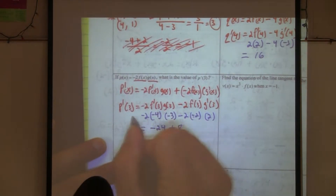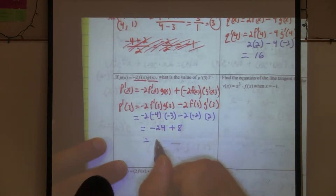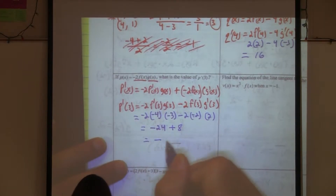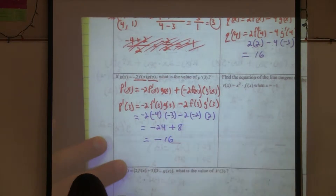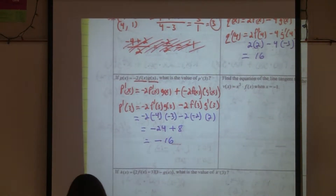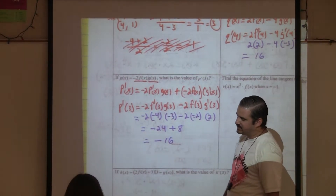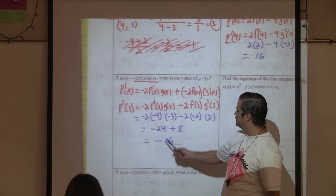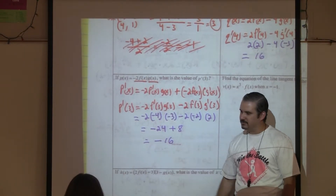Together we end up with negative 16. Different signs — subtract and keep the sign of the larger. Twenty-four minus eight is sixteen, and the negative was bigger, so the answer is negative sixteen.